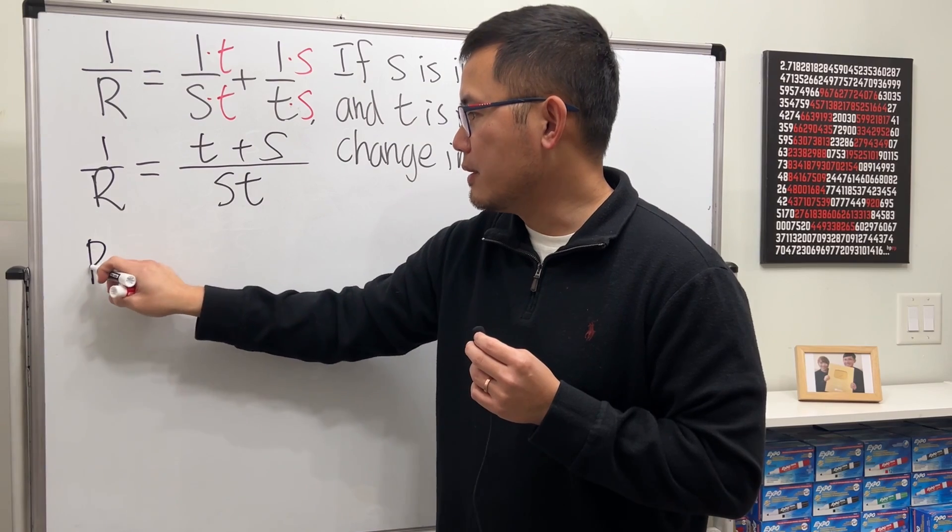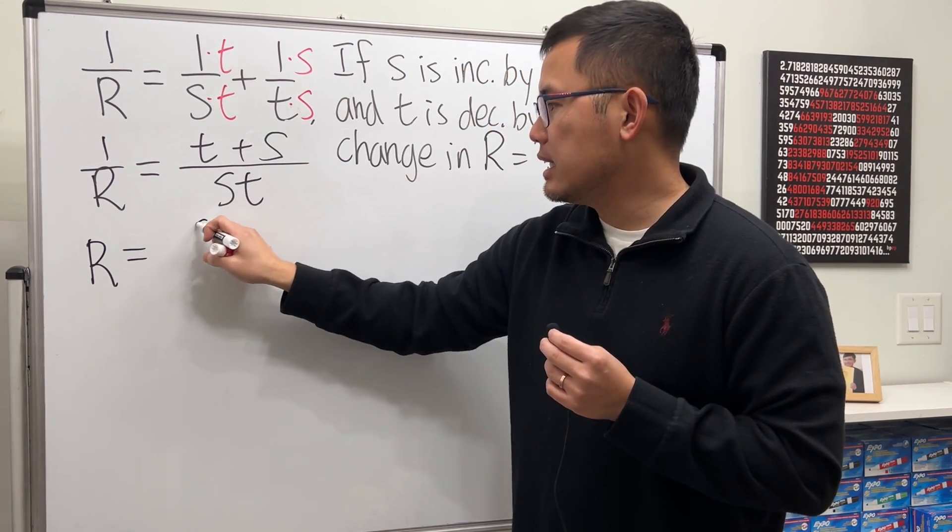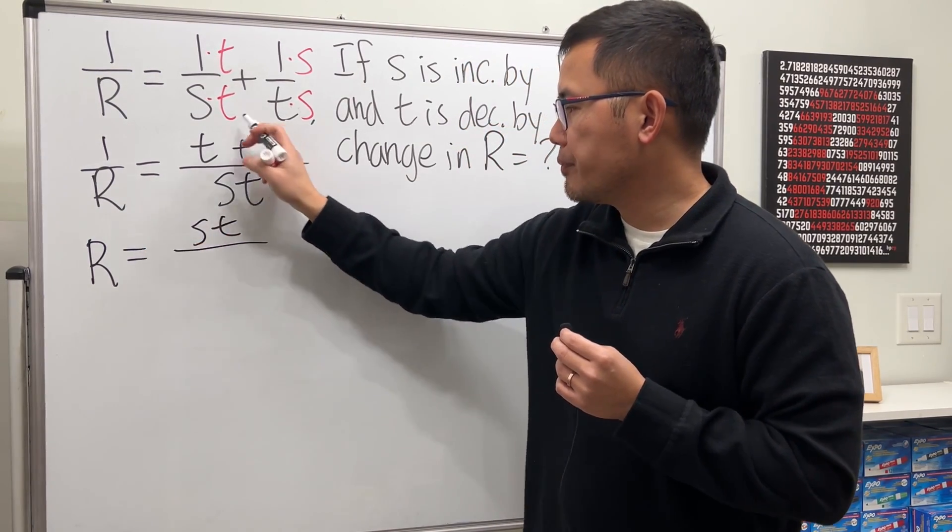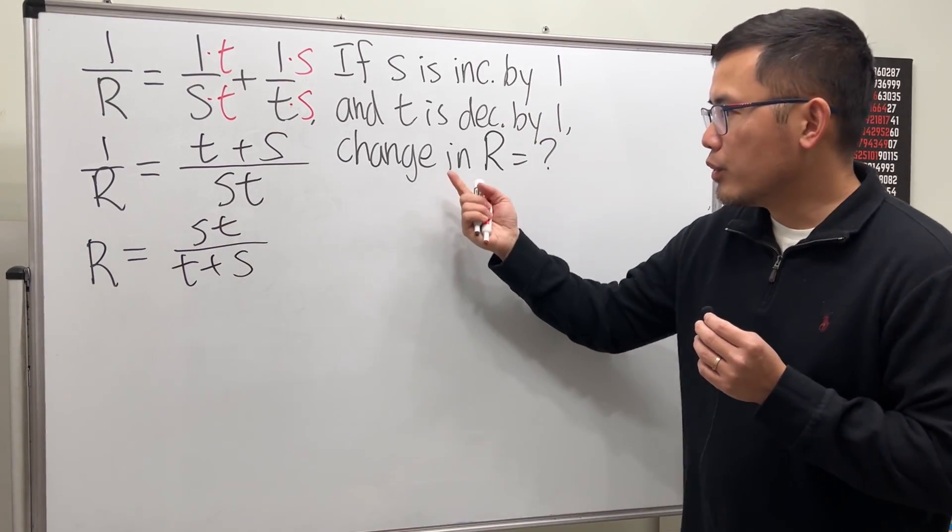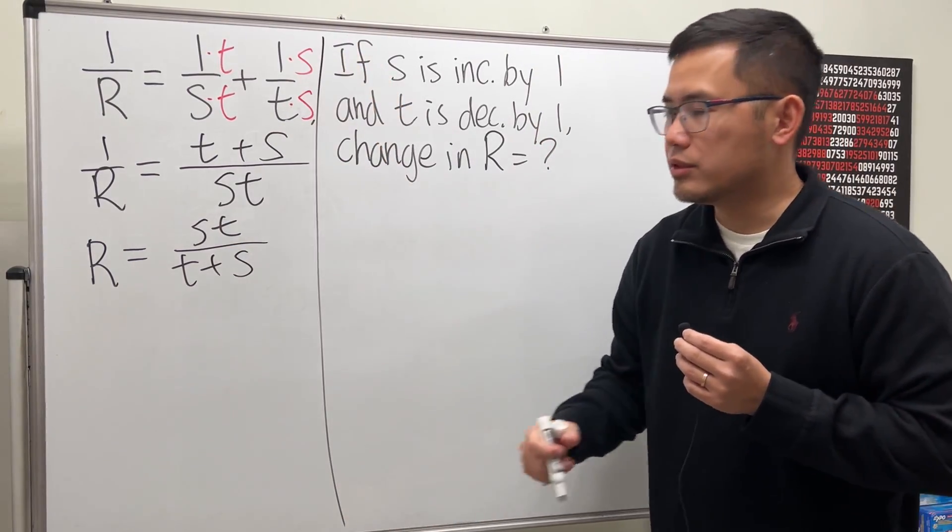We're not done yet because R is on the bottom, so we have to take the reciprocal on both sides. We have R equals ST on the top over T plus S. Now to find the change in R, this is all we have to do.